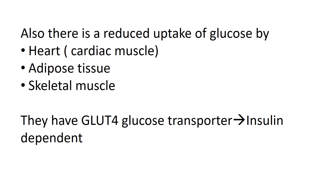There is also a reduced peripheral uptake of glucose by adipose tissue, skeletal muscle, and cardiac muscle because their glucose transporter is GLUT4, which is insulin-dependent. But now glucagon has a predominant action.